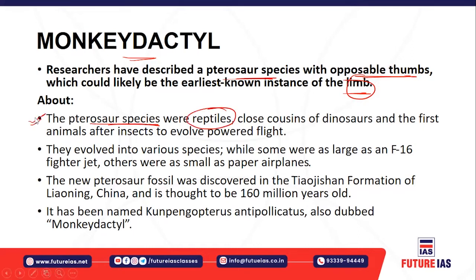The pterosaur is also considered a cousin of dinosaurs, and can be considered the first animal after insects to evolve a powerful flight, while also being able to run like a reptile. They evolved into various species over time. Their size ranges from as small as a paper plane to as large as an F-16 fighter jet, belonging to the United States of America.